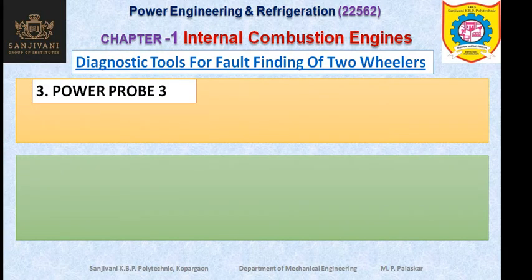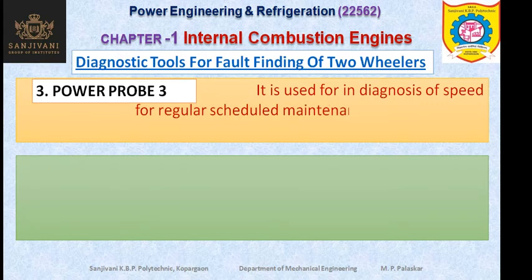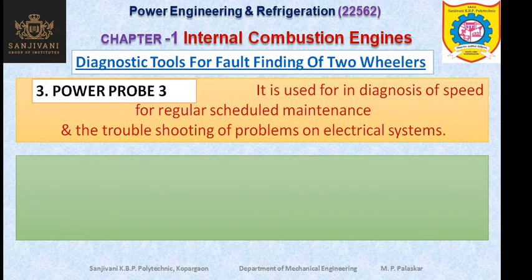The next tool for finding faults in two-wheelers is the Power Probe 3. Power Probe 3 is used in the diagnosis of speed for regular maintenance — it is part of the regular scheduled maintenance. It is also used for troubleshooting problems on electrical systems. If there are any problems on electrical systems, these problems will be detected and the troubleshooting can be done with help of Power Probe 3.